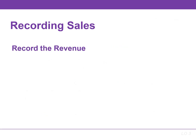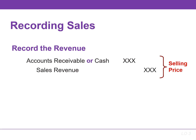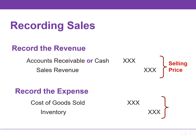The seller makes two entries for each sale. The first entry records the sale — the seller increases or debits cash or accounts receivable if a credit sale, and also increases or credits sales revenue. The second entry records the cost of the merchandise sold — the seller increases or debits cost of goods sold, and also decreases or credits inventory for the cost of those goods.